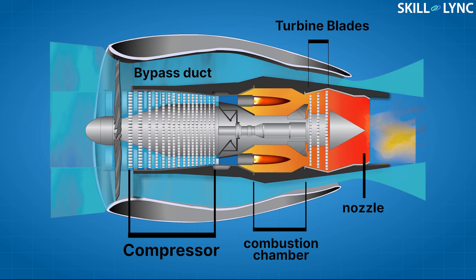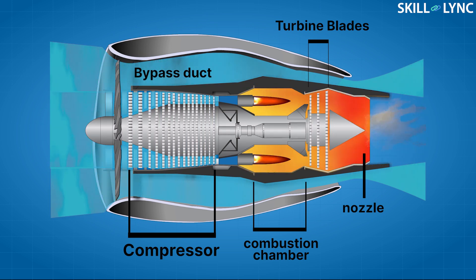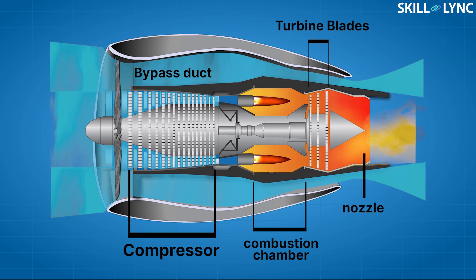This compressed air flows into the combustion chamber where it is mixed with fuel and ignited. On ignition, the fuel-air mixture releases a lot of hot gases at high velocity. These hot gases are used to rotate turbines and exit out of the nozzle.